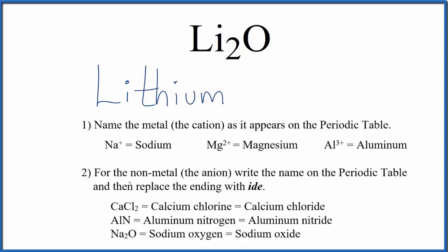Next, we'll write the name for the nonmetal, that'll be the negative ion, as it appears on the periodic table. So O, that's oxygen, we'll put a lowercase o, and then we're going to take the ending and replace it with IDE.